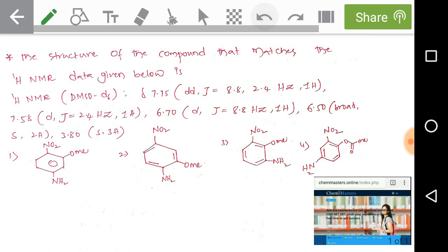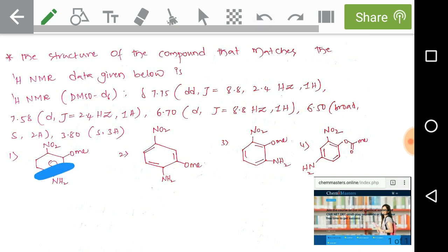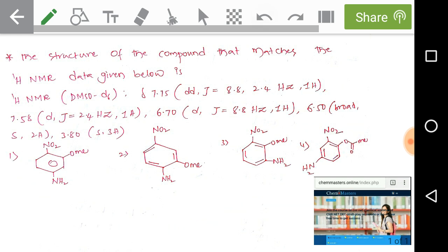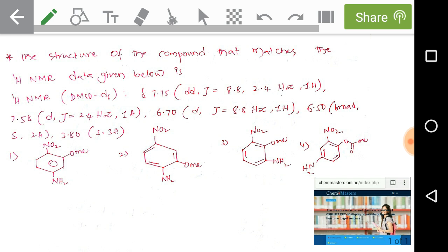If you look at 6.50 broad singlet with two hydrogens, we need to check for the presence of two hydrogens on one particular atom. The presence of two hydrogens on one single atom with no adjacent NMR active nuclei is simply NH2. Nitrogen is having two hydrogens and the adjacent carbon doesn't have any NMR active nuclei — that's why it gives a broad singlet for two hydrogens at 6.50 delta, indicating the presence of a primary amine NH2.